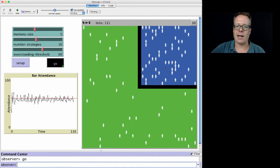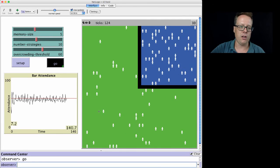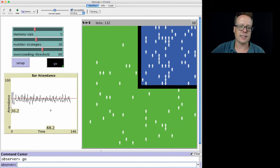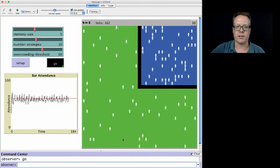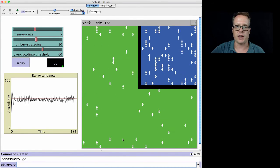It shows you how many individuals are in the bar, how many aren't in the bar. It shows you what the average attendance is. So it shows you most of the main points that the original Brian Arthur paper mentioned.